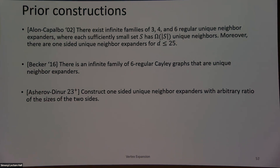What we want to show is that there are infinite families of three, four, and six regular unique neighbor expanders such that small sets have many unique neighbors. Prior work also showed one-sided unique neighbor expanders for D less than 25. Becker showed there are unique neighbor expanders which are also Cayley graphs. And in a preprint posted this year, Asherov and Dinur showed there are one-sided unique neighbor expanders where the sizes of the two sides can have any ratio.